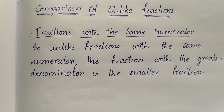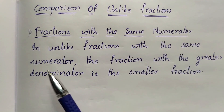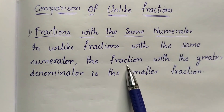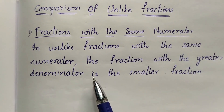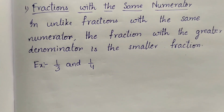First we are going to learn about fractions with the same numerator. The denominators are different, but if the numerator is the same, how to compare such unlike fractions? In unlike fractions with the same numerator, the fraction with the greater denominator is the smaller fraction. In such cases, the greater denominator means that fraction becomes the smaller fraction.